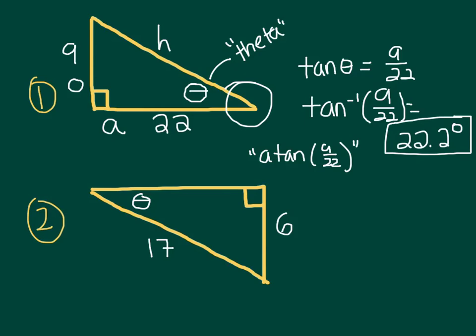Okay, now let's look at example 2. My theta is now on the top left, so I'm gonna relabel my sides. The 17 is my hypotenuse, the 6 is my opposite, and then I have my adjacent over on the top. So I know the opposite and the hypotenuse, so that's gonna be sine of theta equals 6 over 17, opposite over hypotenuse.